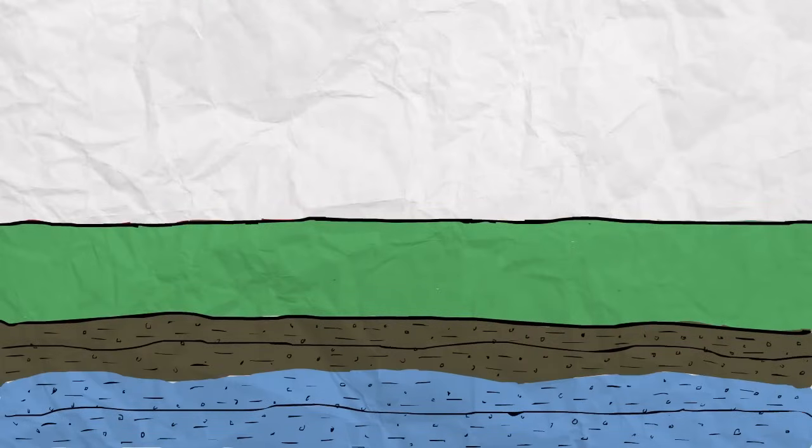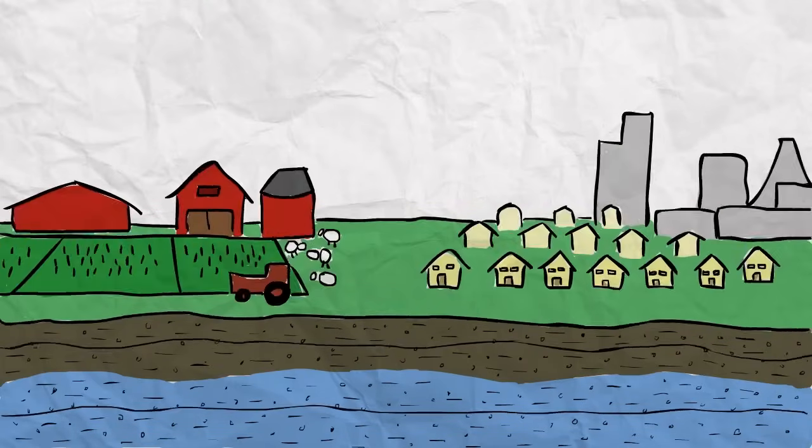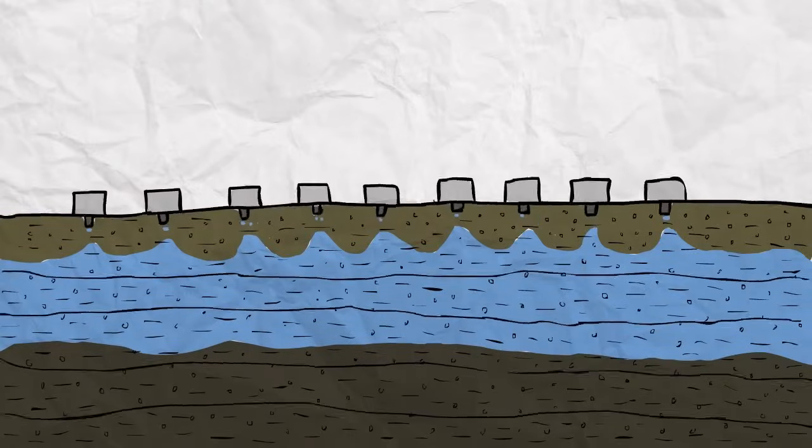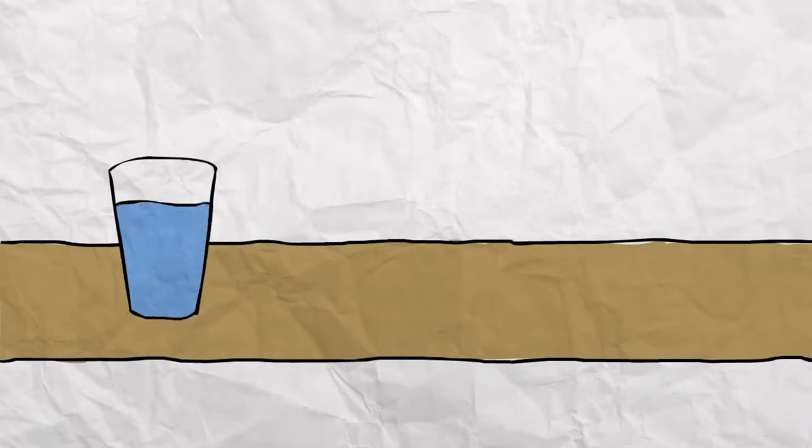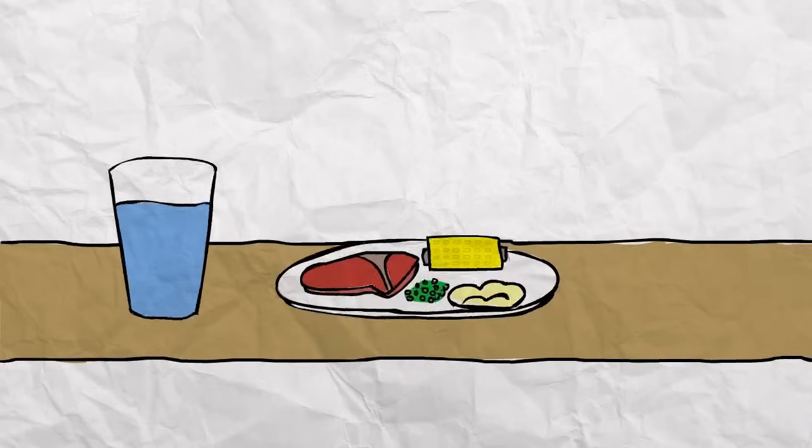Of course, there's another way that groundwater can leave the ground: us. Humans depend on groundwater, and there are thousands of wells all over the country that draw water out of aquifers. In many parts of the country, the water you get from the tap comes from the ground. However, we use most of our groundwater to help grow the food we eat.